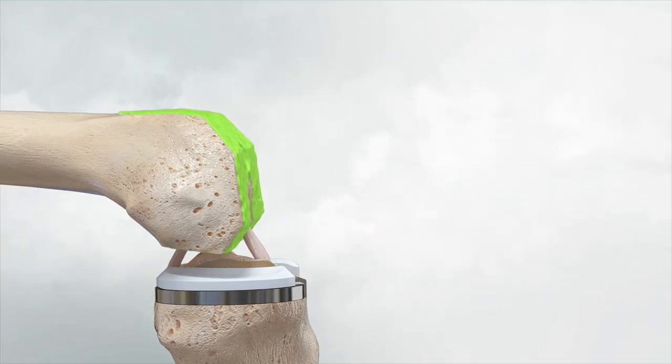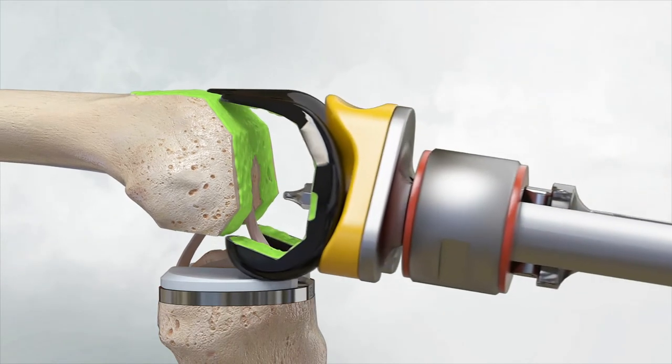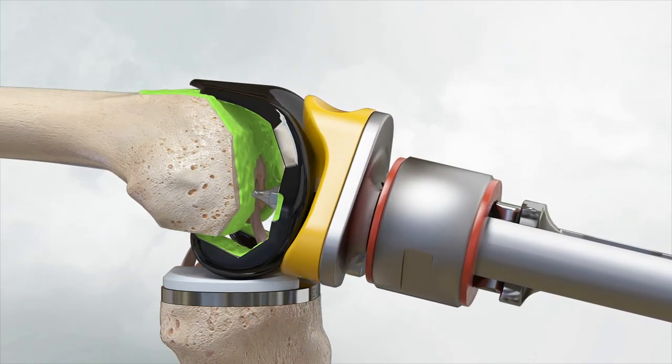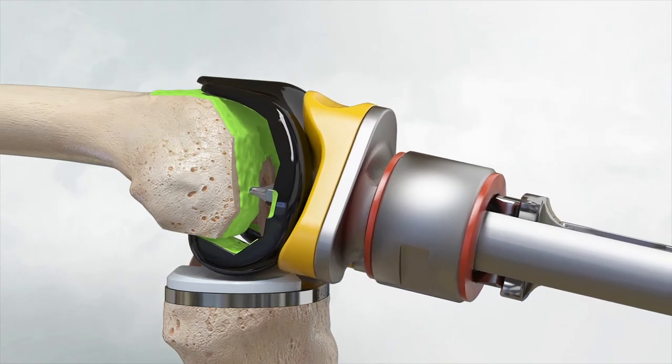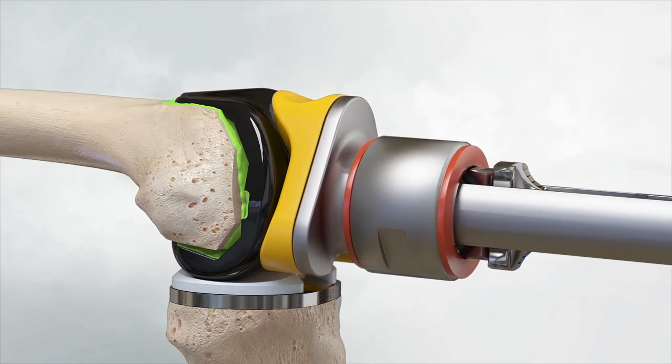Place the femoral component onto the femur by positioning the proximal edge of the posterior condyles at the distal end of the posterior resection and rotating the femoral component to align the tips of the lugs to the prepared lug holes in the femur.